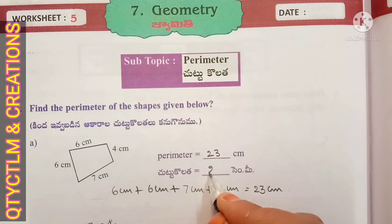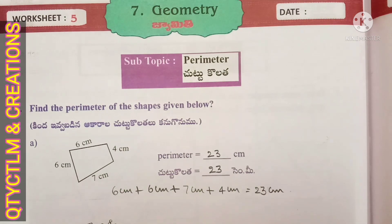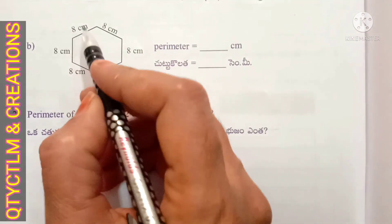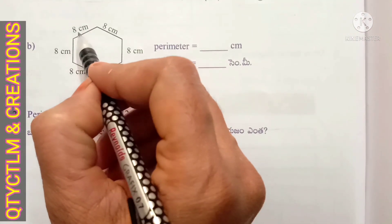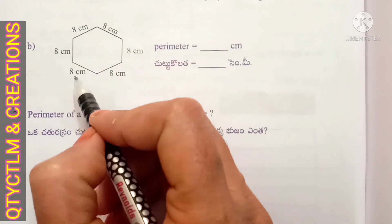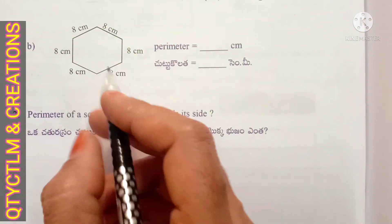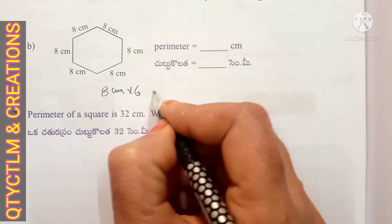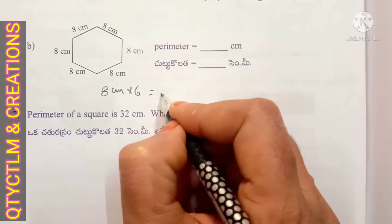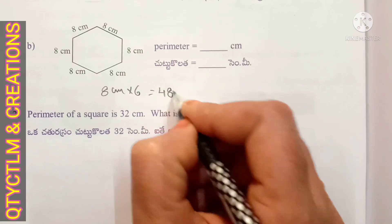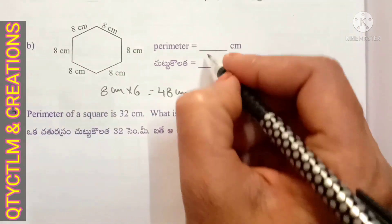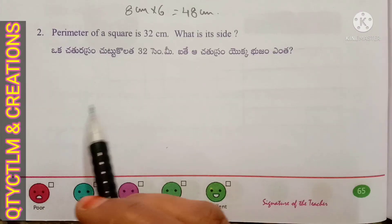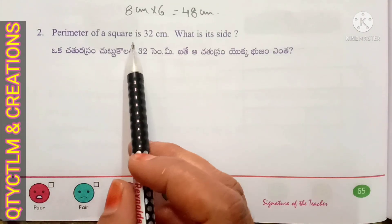Next question. Here also, first side is 8 centimeters, second side is 8 centimeters. There are six 8s, so 8 centimeters into 6 sides — that is equal to 8 sixes are 48 centimeters. So perimeter is equal to 48 centimeters.